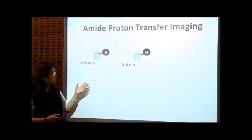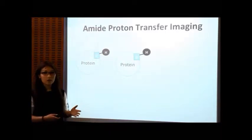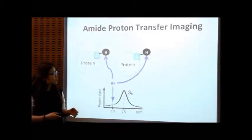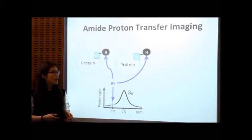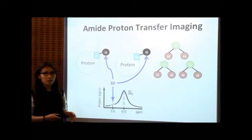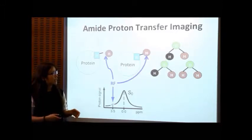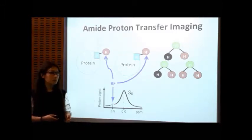These are amide protein molecules which are shown in black. We can selectively knock off the MRI signals from these amide protons. These protons can then exchange with the surrounding water protons and get transferred into water molecules.